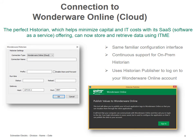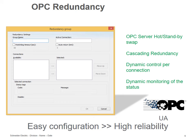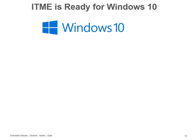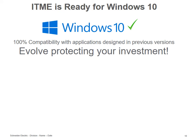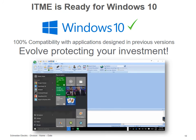You have your ideal IoT solution right here. For OPC redundancy, we added the native interface for that: you create the connections and then you select the order of the connections, and that's how the redundancy is going to work. We also validated ITME on Windows 10 and we are Windows 10 ready — this means 100% compatibility with applications designed on previous versions of ITME as well as previous versions of the operating system, which allows you to evolve your projects while protecting your investments.